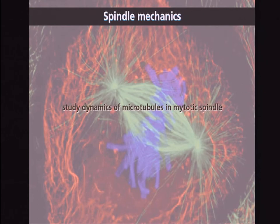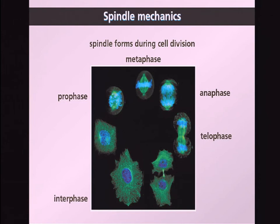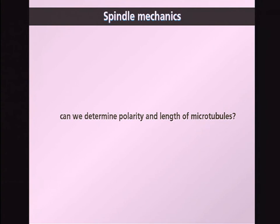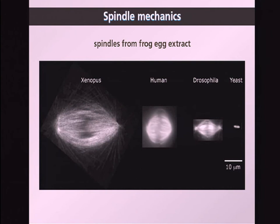Now let's turn our attention to another part of the cytoskeleton — the microtubules — which, when cut, don't retract elastically but instead depolymerize from the cut ends. Microtubules are especially important during cell division. You can see a cycle here starting at 7 o'clock and ending at 5 o'clock, and we're particularly interested in the spindle that microtubules form during metaphase. In green you see the spindle, and in blue the chromosomes that are later pulled apart. We looked at spindles from frog eggs because they are large compared to those in human cells and yeast cells.